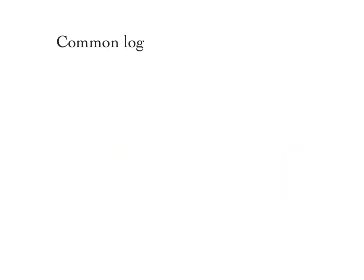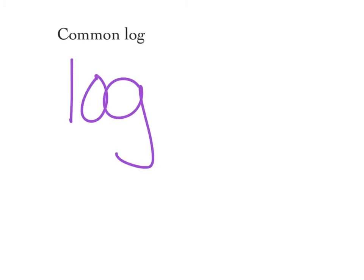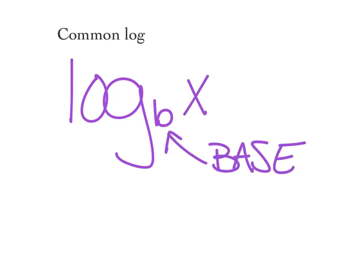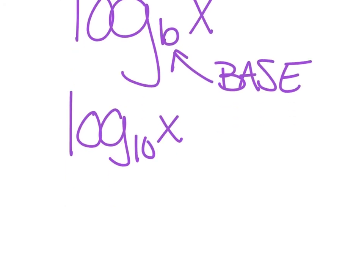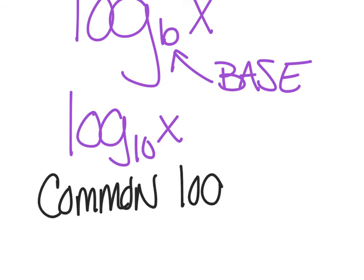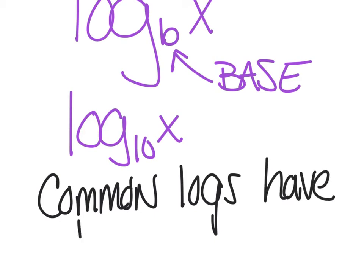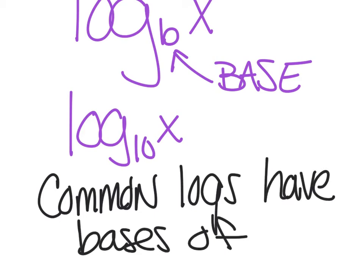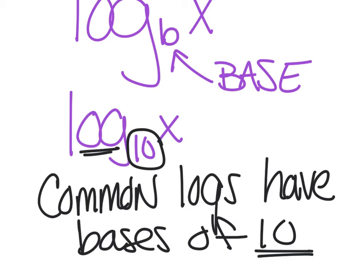Sometimes they're going to give you a log without a base. So just to reiterate, this is my log base b of x — this little guy here is the base. If for some reason they use 'log' but don't put a base in there, they want you to assume that base is a base of 10. So let's make a nice big note: this is called a common log. Common logs have bases of 10. So they don't have to put this base in there when they use log, because they're assuming it's just a 10.